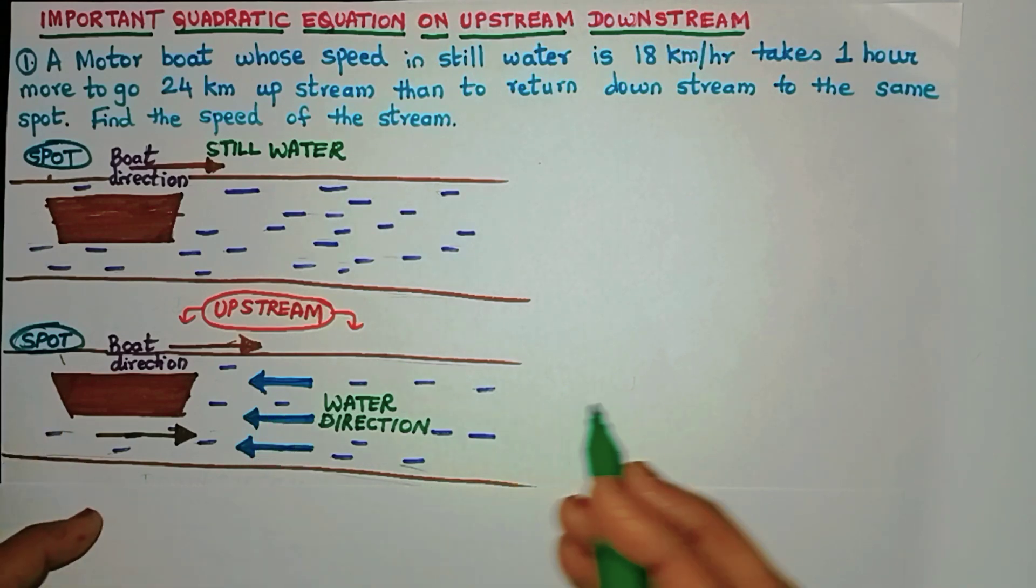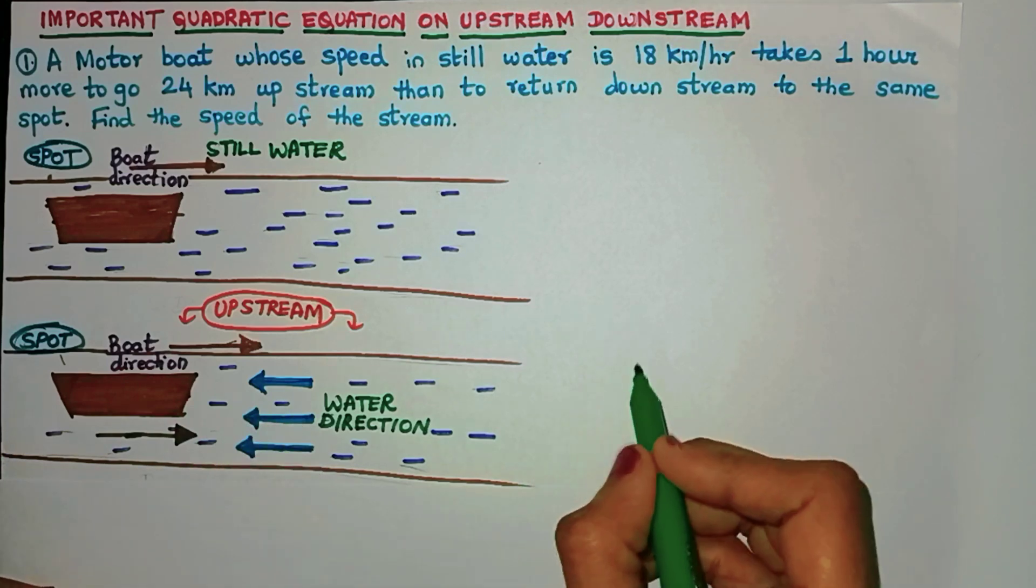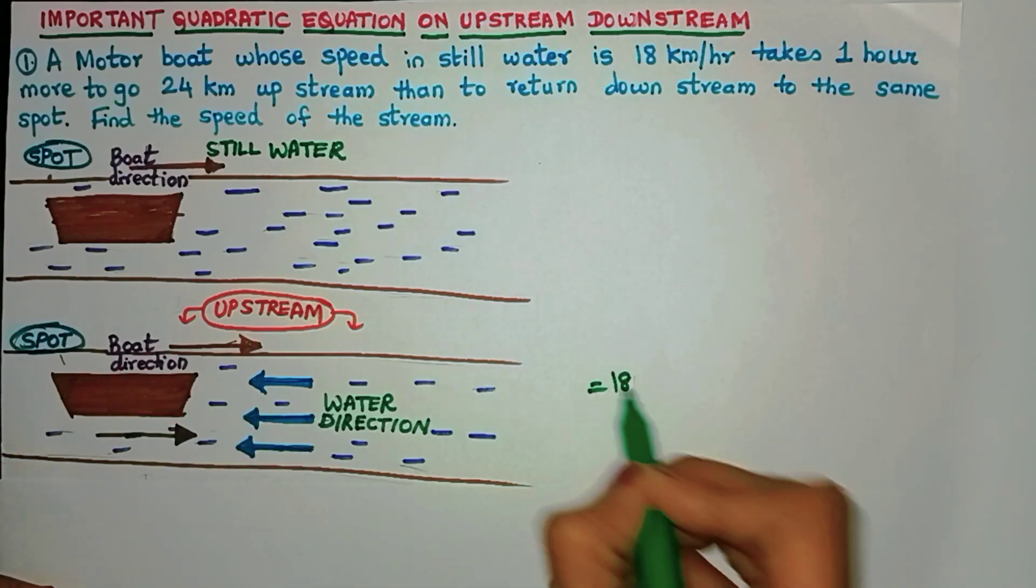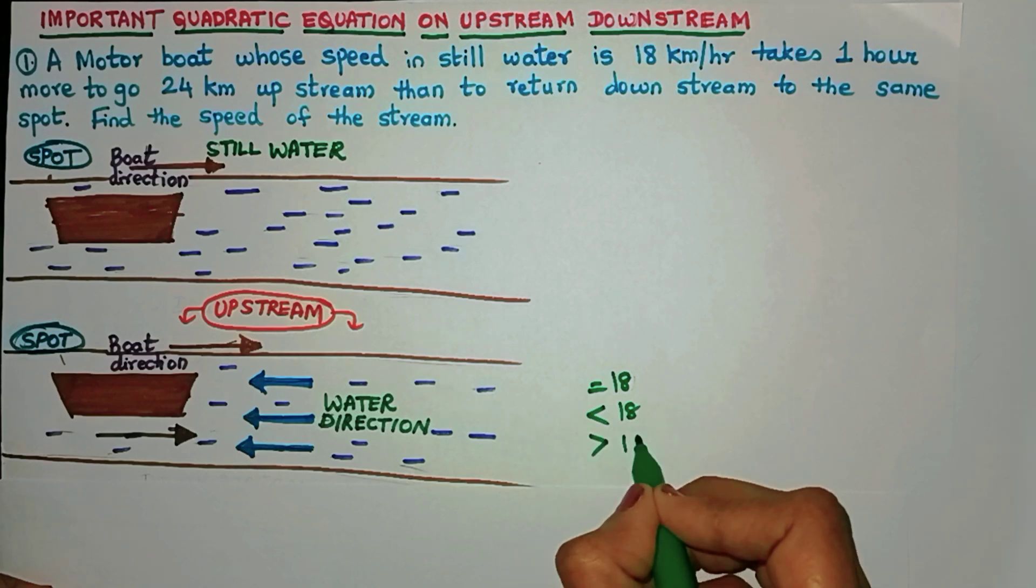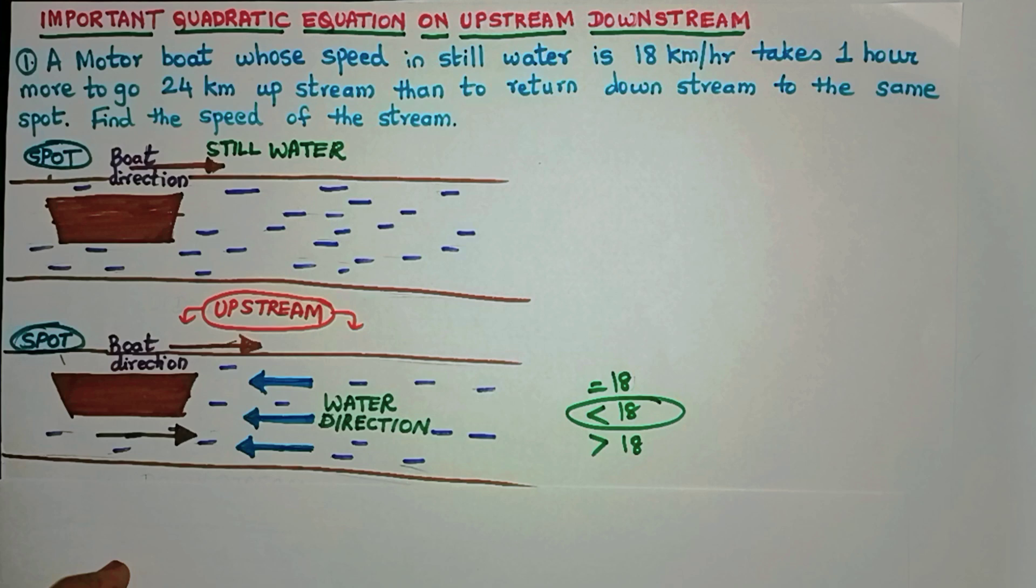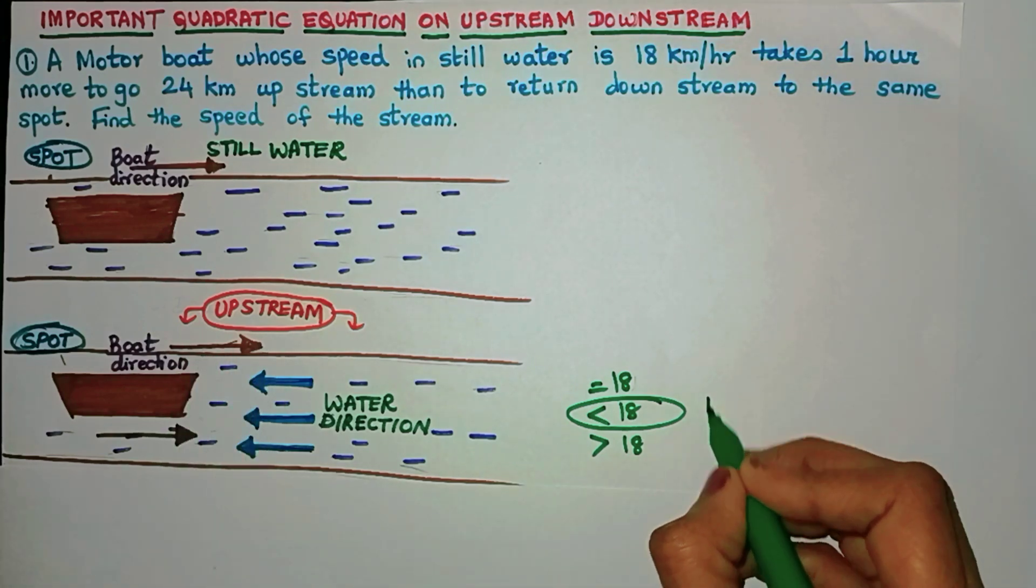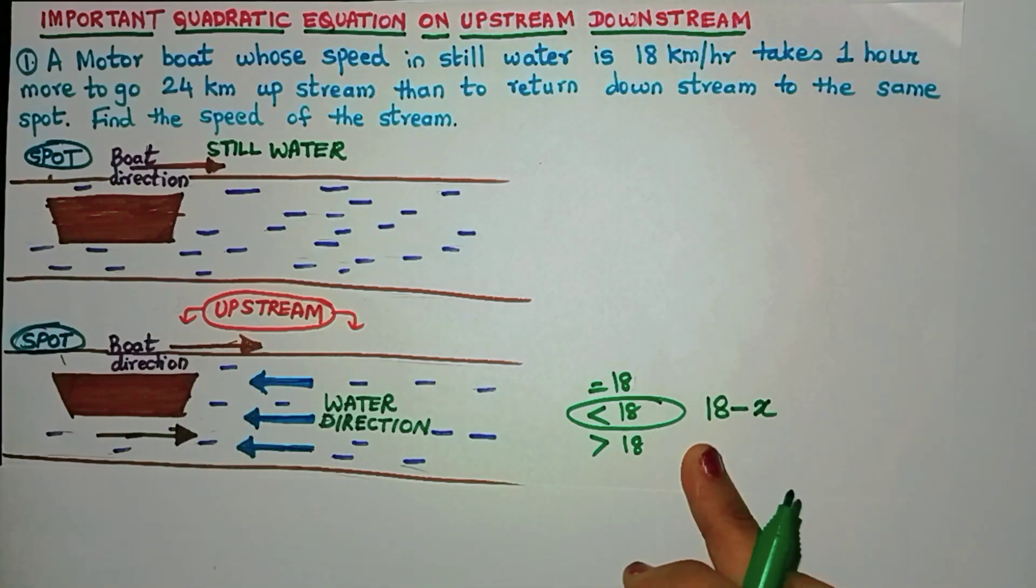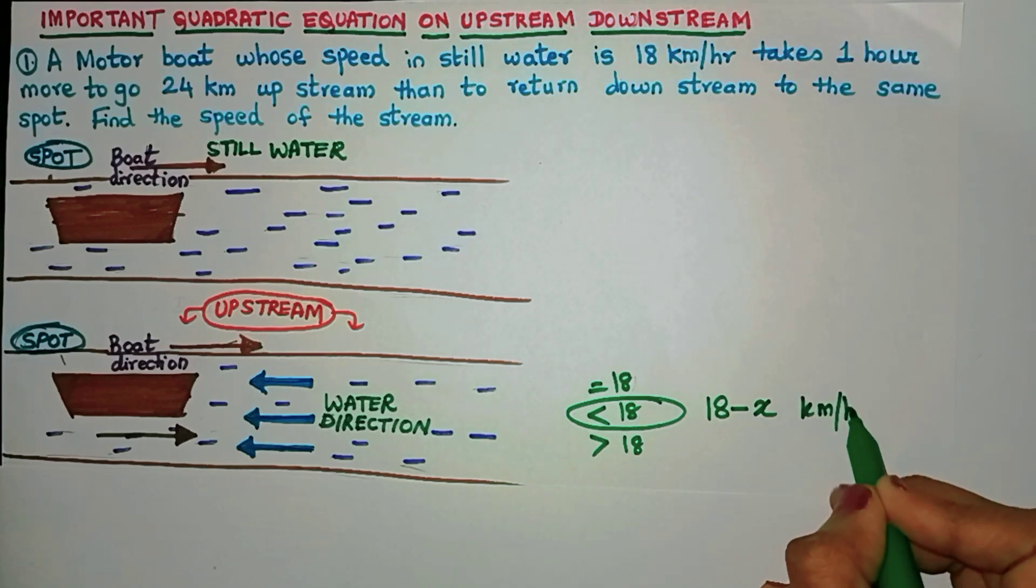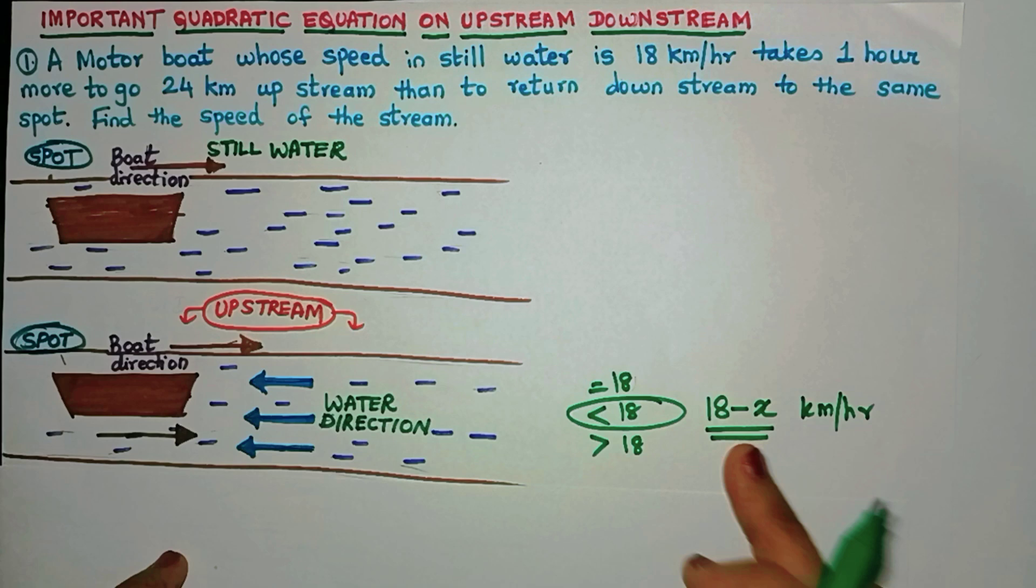In this scenario, what will be the effective speed of the boat? Will it be equal to 18 km/hr, lesser than 18 km/hr, or greater than 18 km/hr? It will be less than 18 km/hr because in this case, the water is trying to slow down the speed of the boat. The effective speed will be 18 minus x km/hr. Remember, it won't be x minus 18. This is the effective speed of the boat.